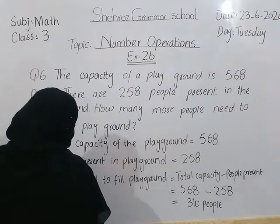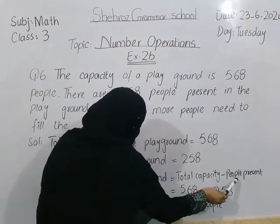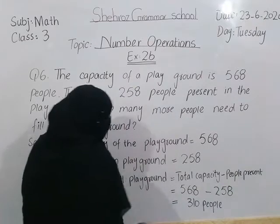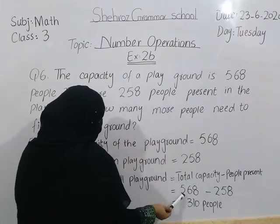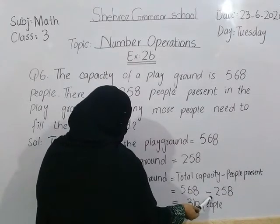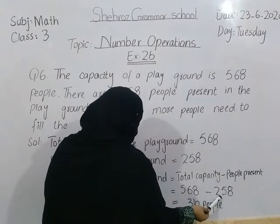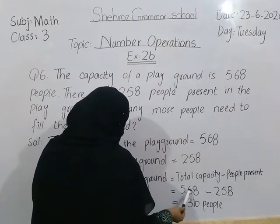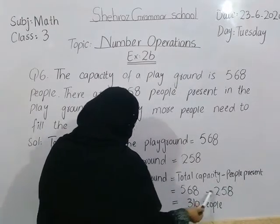People needed to fill the playground is equal to: we subtract the people present from total capacity. Total capacity is 568, subtraction sign, people present is 258. So we have 568 minus 258.